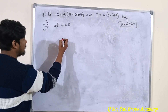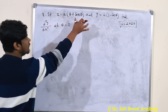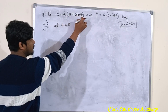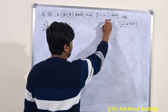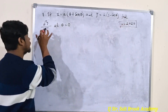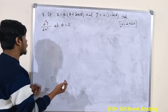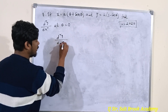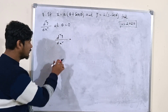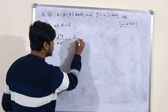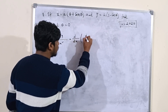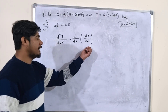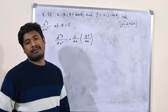Find what is the double derivative. If x is given as a function of theta: x = a(θ + sinθ), and y = a(1 − cosθ), you have to find d²y/dx². The double derivative d²y/dx² means finding the derivative of dy/dx with respect to x — so first we find dy/dx.